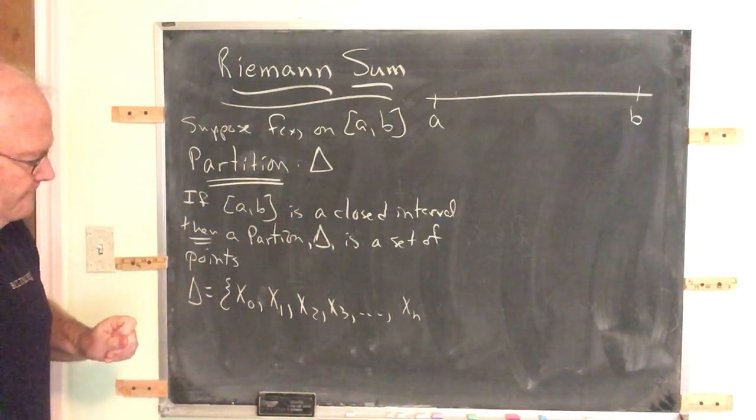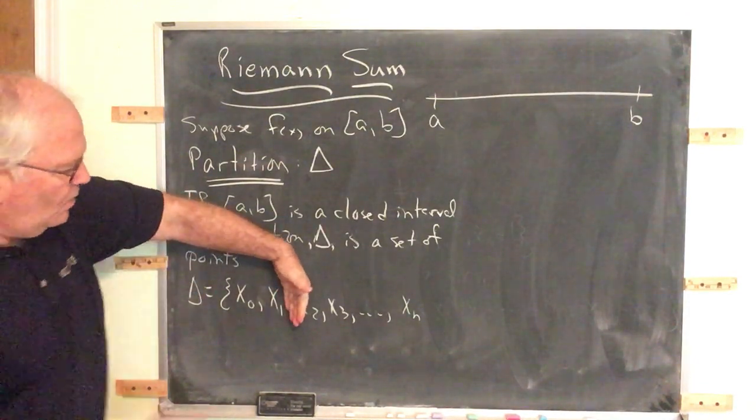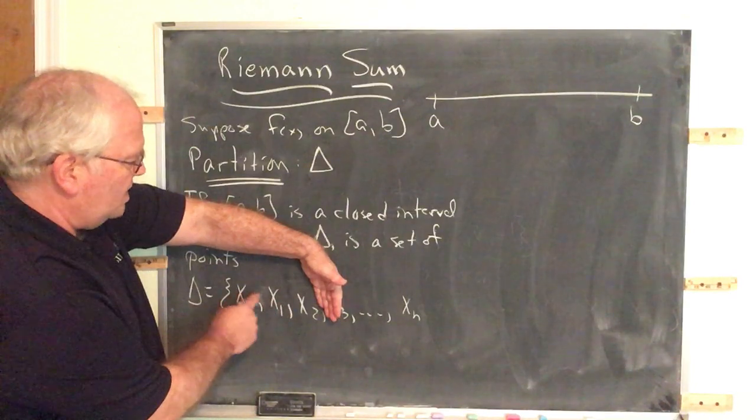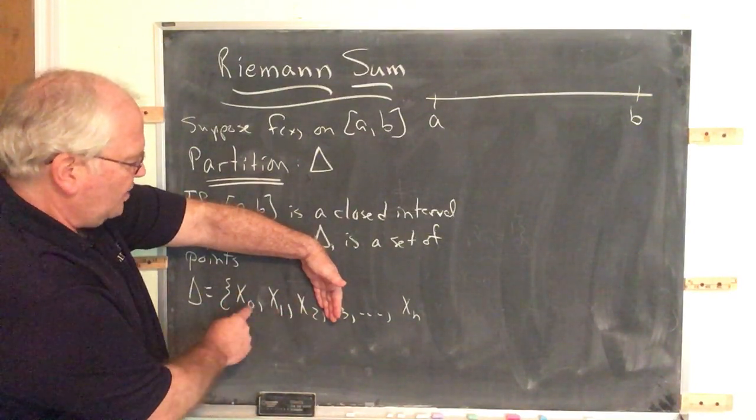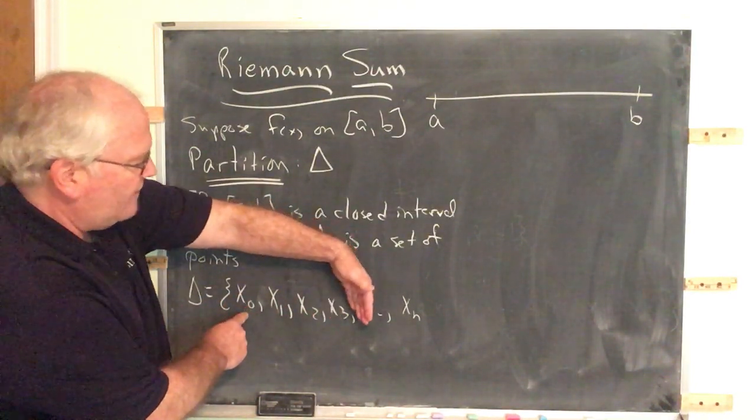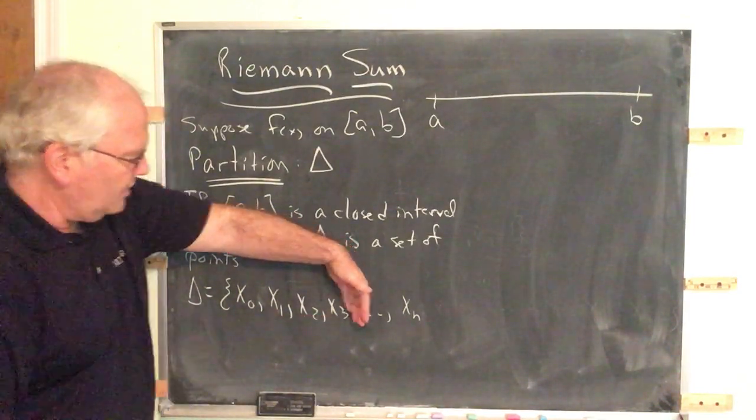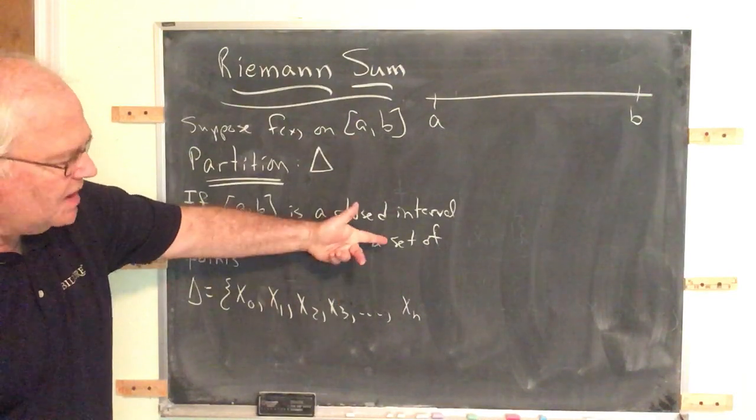But the number of points is not n. Notice, when I say x1, there are two points. When I say x2, there are three points. Since we're starting the numbering at zero, if I have x3, there are four points. And so the number of points is this subscript plus one.